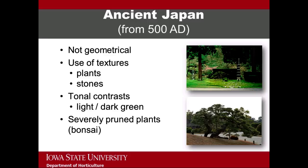Some of the defining features of the gardens of ancient Japan are that they were not geometrical or axial in their layout. Texture was, and continues to be, an important part of Japanese gardens. Textural elements include plants as well as stones. Texture is accentuated by various tonal contrasts where light and dark are next to each other, in particular when light green is contrasted with dark green. And severely pruned plants, or bonsai, are central to Japanese gardens. The top image of this slide is of the pagoda lantern from Sapporo, Japan, a sister city to Portland, Oregon, and the surrounding Portland Japanese garden. The bottom image on this slide is of a large pine tree that has been pruned to create a bonsai form.